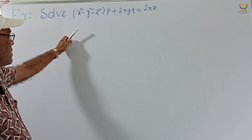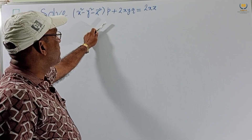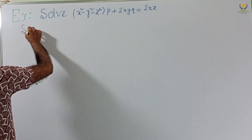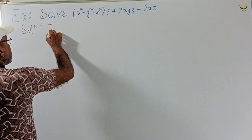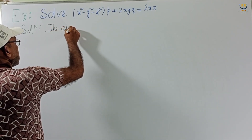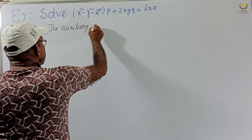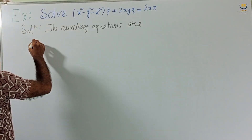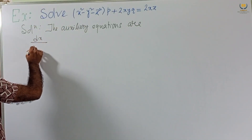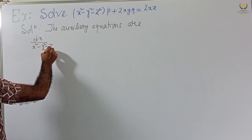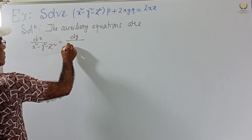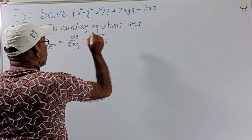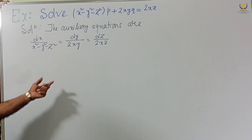Another problem: solve (x²-y²-z²)p + 2xy·q = 2xz. The auxiliary equations are dx/(x²-y²-z²) = dy/(2xy) = dz/(2xz).